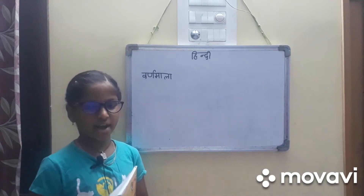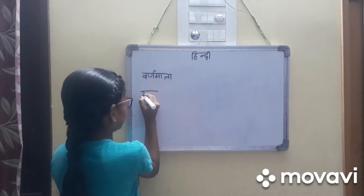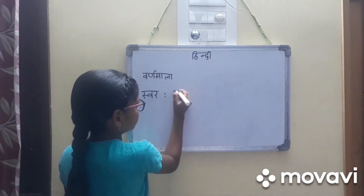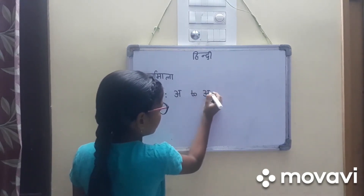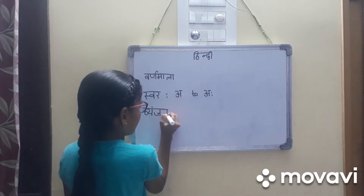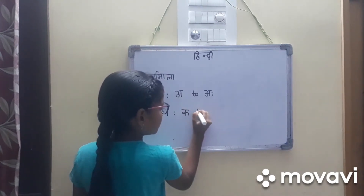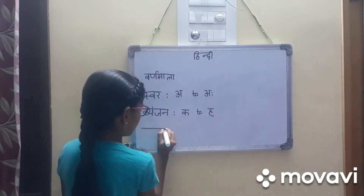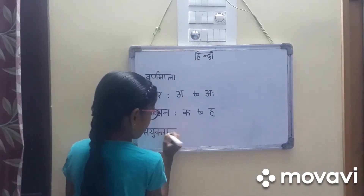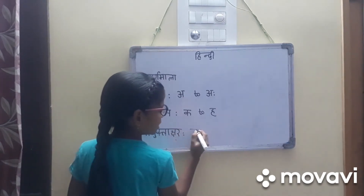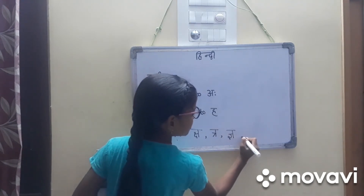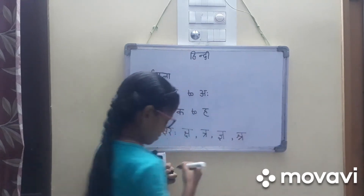Varna Mala is divided into three parts. They are: Swar, Vianjan, and Samyuktaakshar. Swar goes from A to Aha. Kaatu Ha. Samyuktaakshar: Sh, Cha, Sha, Tra, Nya, Shra. Okay, Varna Mala — Swar A to Aha.